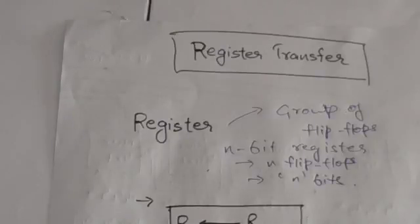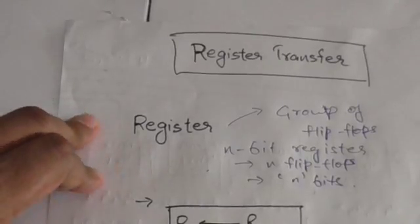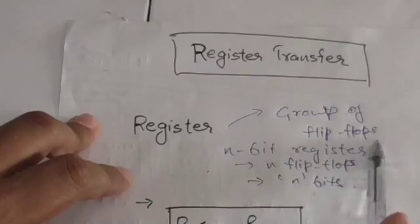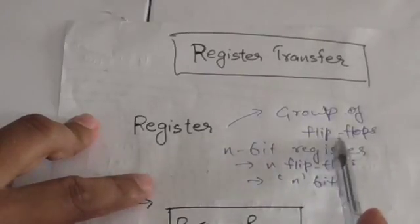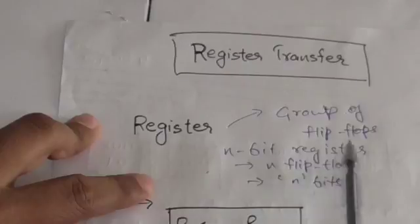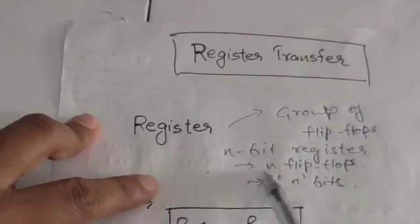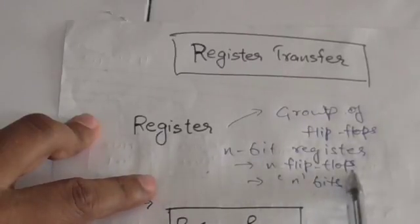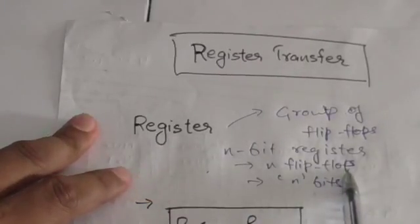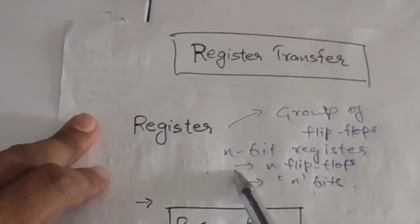Hello friends, welcome back. In this tutorial we will study about register transfer. First of all, we must know what is a register. A register is a group of flip-flops, and a flip-flop is capable of storing one bit. So an n-bit register is made up of n flip-flops — it is a group of n flip-flops.